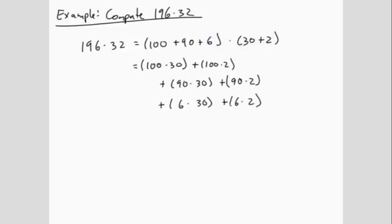Now we're going to multiply these out. 100 times 30 is 3000, plus 100 times 2 is 200, plus 90 times 30 is 2700, plus 90 times 2 is 180, plus 6 times 30 is 180, plus 6 times 2 is 12.